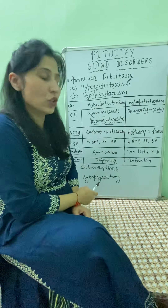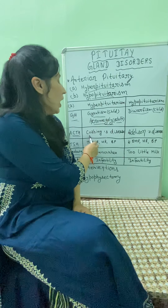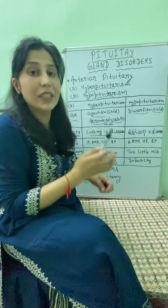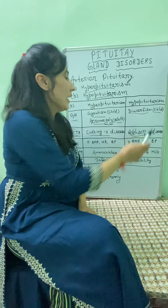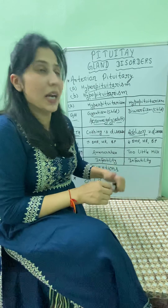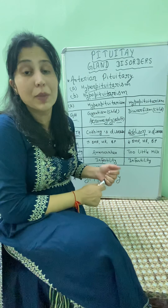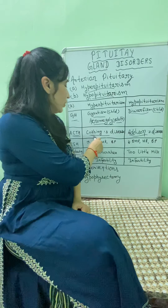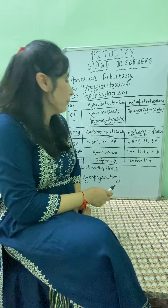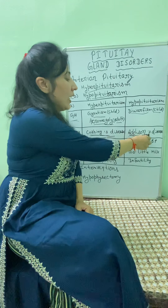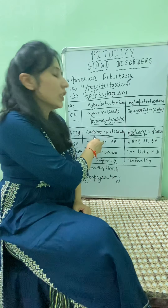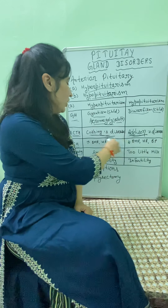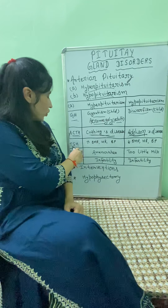Next is adrenocorticotrophic hormone. In hyperpituitarism, this causes Cushing's disease, where cortisol is increased. In Addison's disease, there will be less cortisol. In Cushing's disease, high cortisol affects fat and carbohydrate metabolism, leading to high blood glucose, high blood pressure, increased salt cravings, and obesity with purple stretch marks. Addison's disease is the opposite of Cushing's disease.